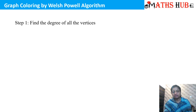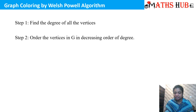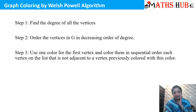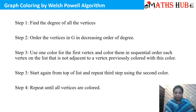What is the Welsh-Powell algorithm? Step one: find out the degree of all the vertices present in the graph, then arrange the vertices in decreasing order of their degree — that means from biggest to smallest. Step two: use one color for the first vertex and color the remaining vertices in sequential order, each vertex that is not adjacent to a vertex already colored with that color. Step three: start again from the top of the list and repeat using the second color. Repeat until all the vertices are colored, and the number of colors used gives the chromatic number.